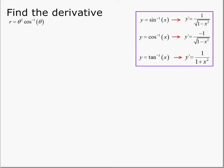The next example, we see we have r equals theta squared cosine inverse theta. This is a product, so we're going to have to apply the product rule.